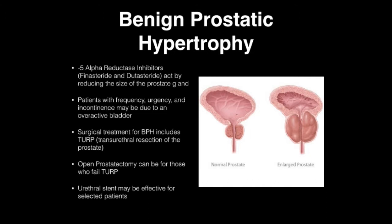Surgical treatment of BPH includes a transurethral resection of the prostate, known as a TURP. Open prostatectomy can be considered for those who fail a TURP. A retrostent may be effective in select patients.